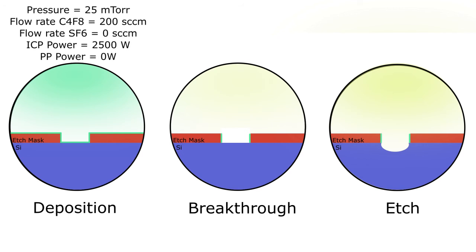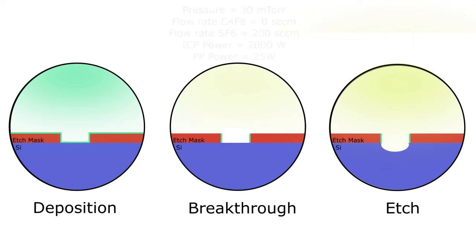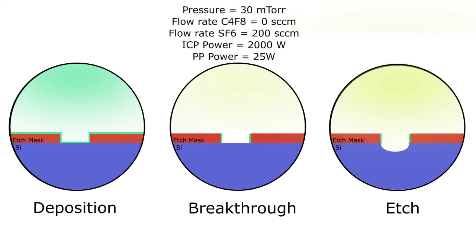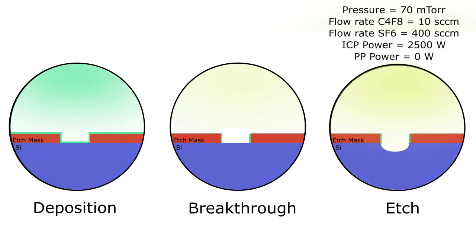In the deposition step, a C4F8 plasma with no bias or acceleration towards the sample is used to deposit a polymeric layer across the sample. In the second step, breakthrough, an SF6 plasma is accelerated towards the sample with a bias and etches anisotropically through the C4F8 polymeric layer. Finally, in the etch step, an SF6 plasma is used to etch isotropically into the silicon.